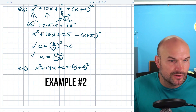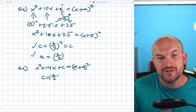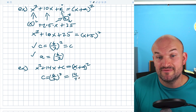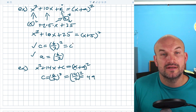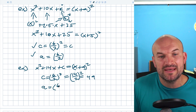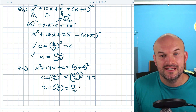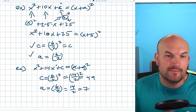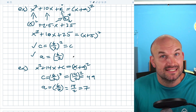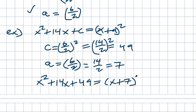In this example, going through the same process: to find c, I use b divided by 2 quantity squared. So it's 14 divided by 2, quantity squared. 14 divided by 2 is 7, and 7 squared is 49. Now for a: a equals b divided by 2, just without the square. So 14 divided by 2 is 7. It's very important that you match the sign of your binomial with the sign of your trinomial. So I can write x squared plus 14x plus 49 equals x plus 7 quantity squared.